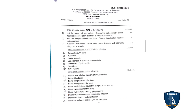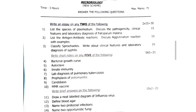The first question paper code is 334, subject is Microbiology. The font size is very small so I will be reading each and every question. Under essay questions, out of 3 you have to write any 2 — 2 into 15 equals 30 marks. The first question is: list the species of Plasmodium, discuss the pathogenicity, clinical features and laboratory diagnosis of falciparum malariae.